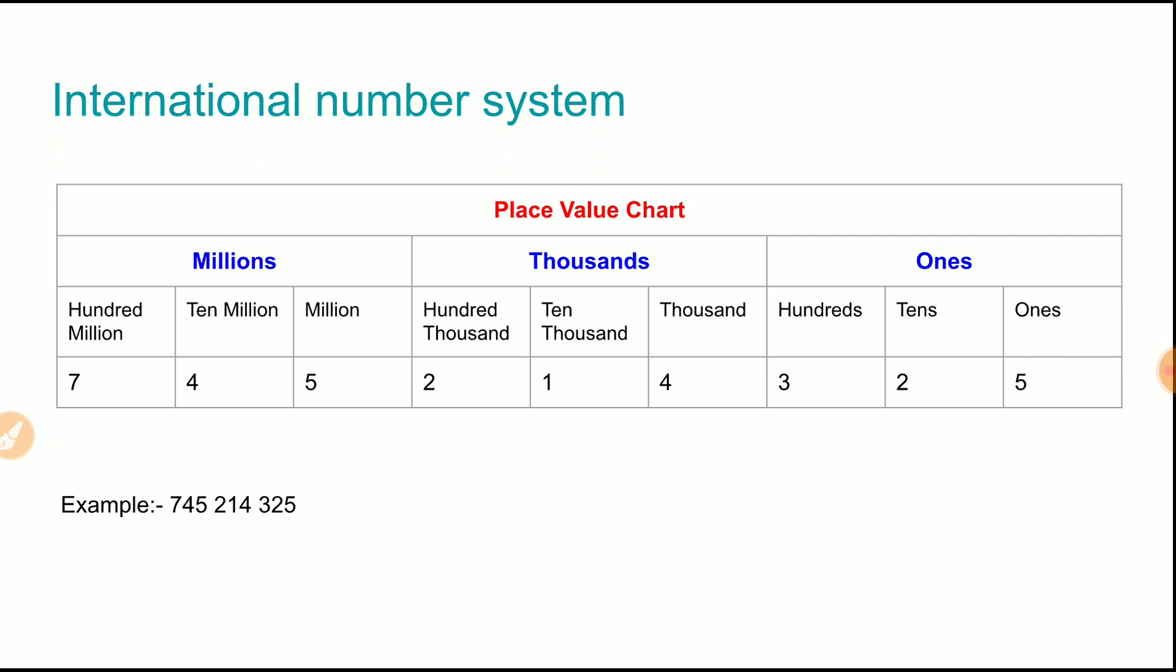Every period consists of three digits. So we will keep a gap or we can put a comma after every three digits. Okay, let's read out the number.